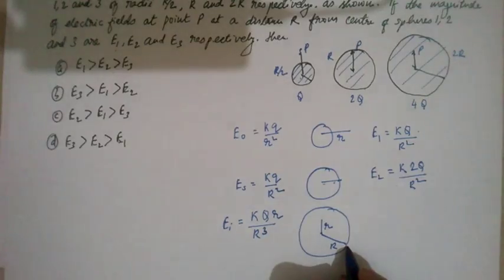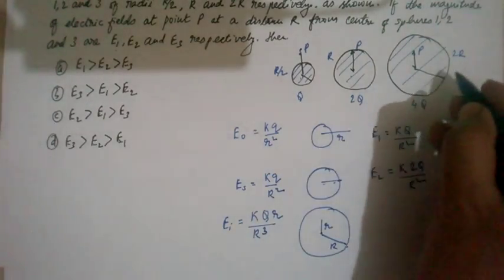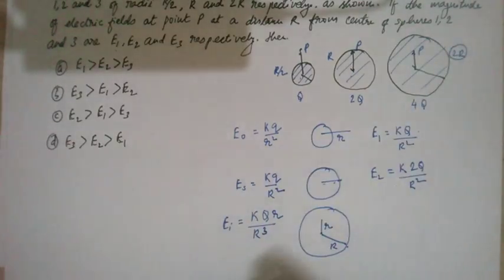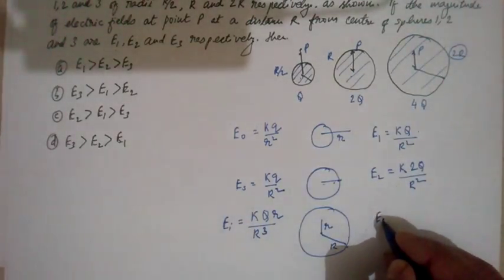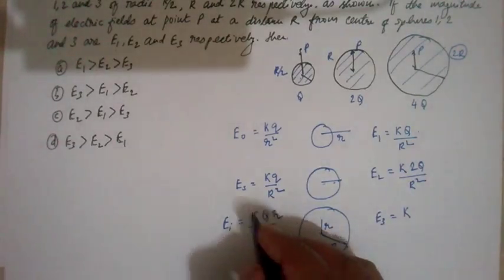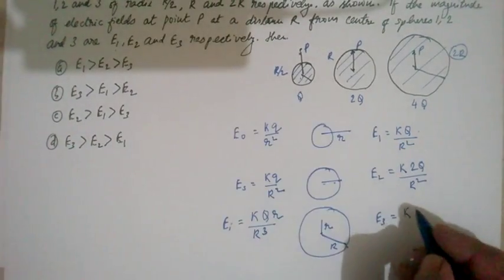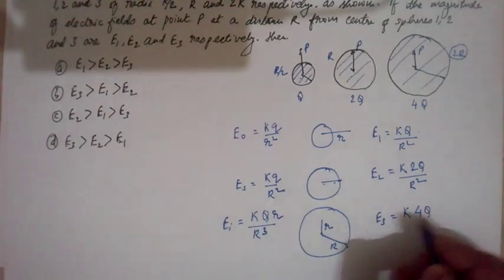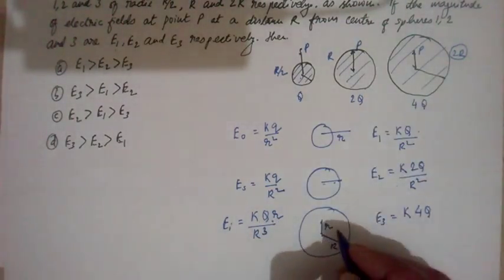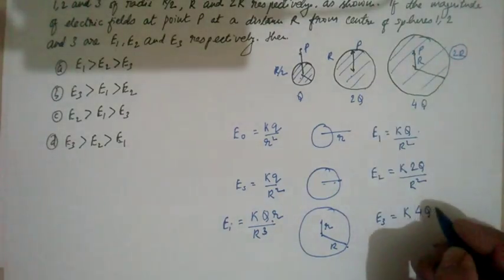The radius of the sphere is twice r, so this expression E3 equals K times the charge Q. Here the charge Q is 4Q, and the distance from the center equals capital R.